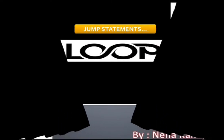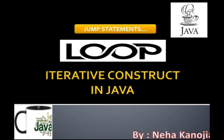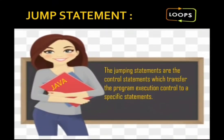Hello everyone. In this video on loops, I'm going to cover the topic of jump statements, which belongs to the chapter on iterative constructs in Java. A jump statement is a statement used to control the flow of execution, transferring control from one statement to another, skipping certain statements. The proper definition: jumping statements are control statements which transfer program execution control to a specific statement.